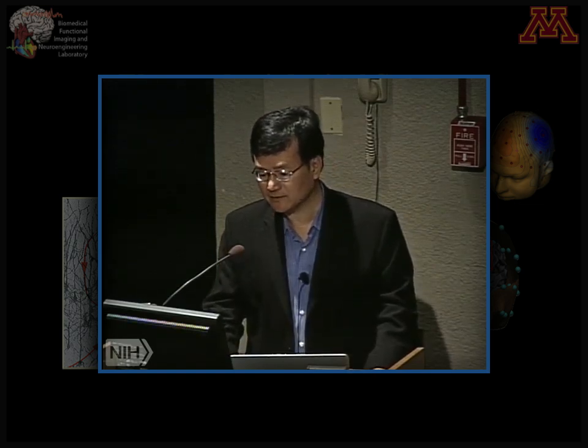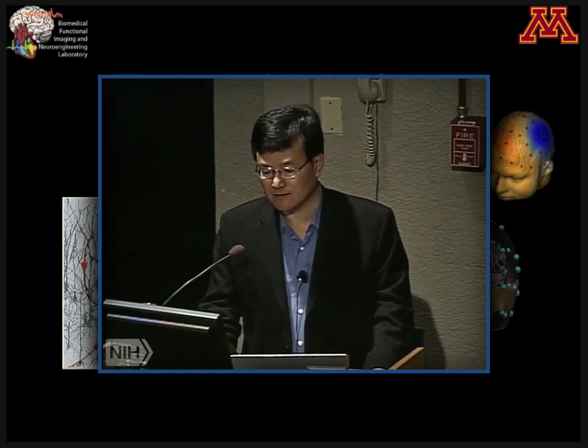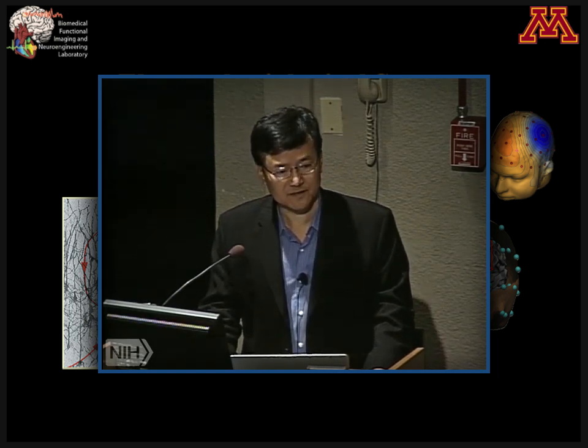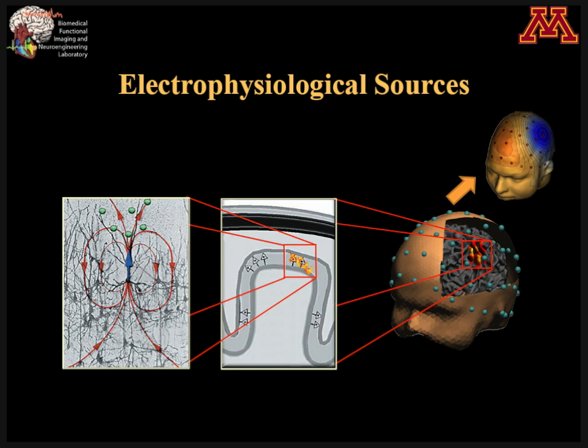We know there are pyramidal cells which line up synchronized, and if they fire synchronized, that will generate a large enough neuronal current density flowing perpendicular to the local curvature. In physics terminology, there will be a neural current density distribution located inside a passive volume conductor. That current flow inside the volume conductor generates EEG as electric potential and MEG as magnetic field.